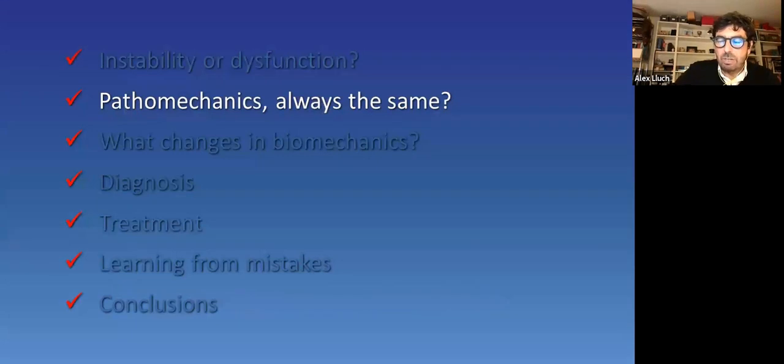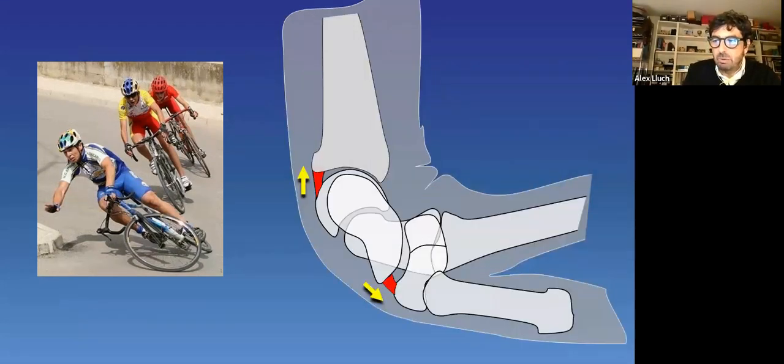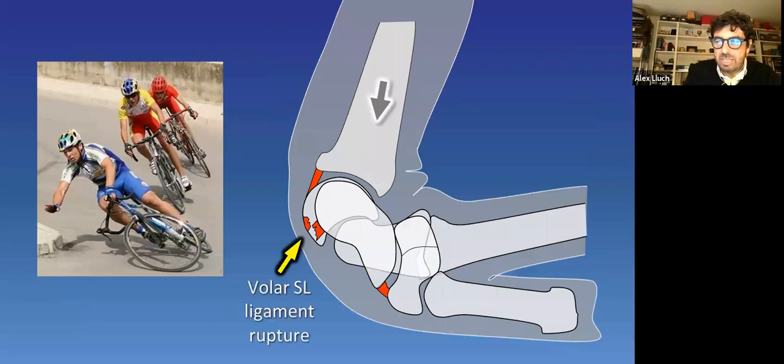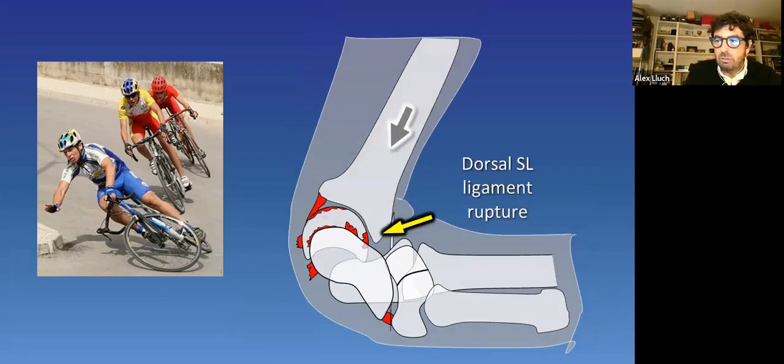How can a scapholunate lesion be produced? Is pathomechanics always the same? We've always been told that scapholunate lesions occur after a fall on the outstretched hand. The hand blocks on the floor, and the flying body, with its high inertial mass, generates huge disrupting forces that will be dissipated in the wrist. With this extension and loading, the volar scapholunate ligament is the first to be in danger and break, followed by the scapholunate interosseous membrane and the dorsal scapholunate ligament. This classic sequence may end with a perilunate injury if the forces continue to pass through the wrist.